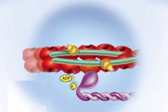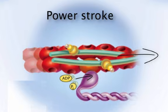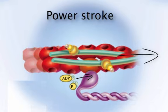Then, myosin releases the ADP and phosphate and flexes into a bent, low-energy position, pulling the thin filament with it. We call this the power stroke.